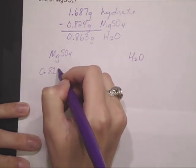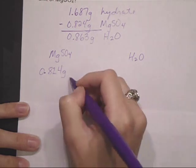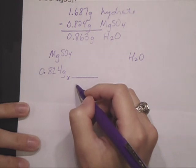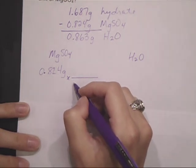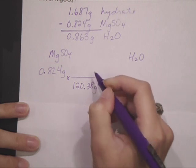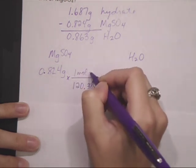So 0.824 grams of magnesium sulfate. The molar mass from that, magnesium plus sulfur plus four oxygens, is 120.38 grams per mole.